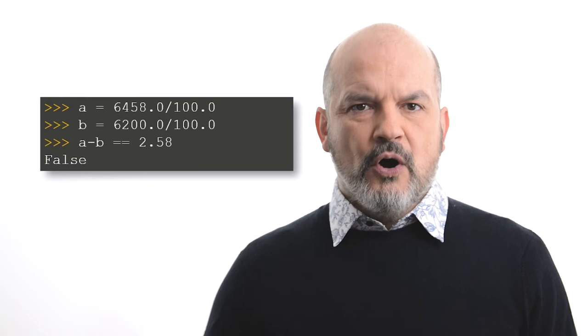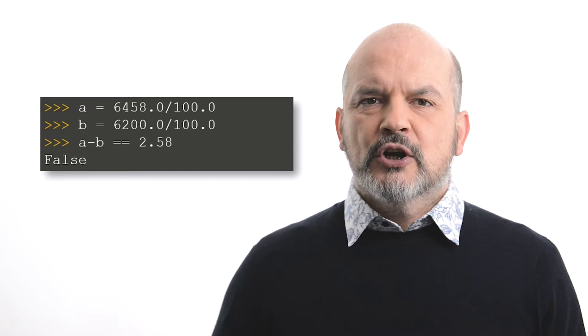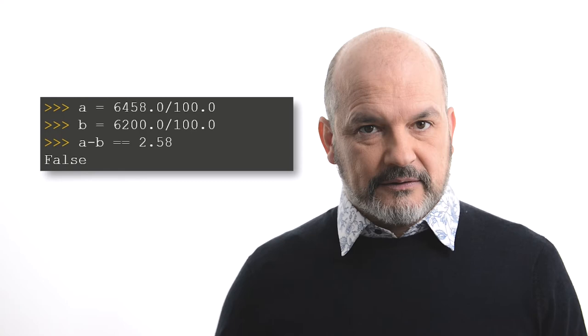There are other surprising results when comparing values of the same type. Exact equality between floating-point numbers is a dangerous concept in Python. Although mathematically speaking, a minus b should be equal to 2.58, due to the representation of a floating-point number in the machine, it is not true in Python.